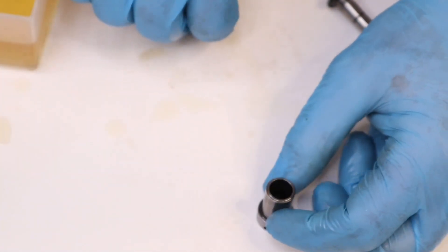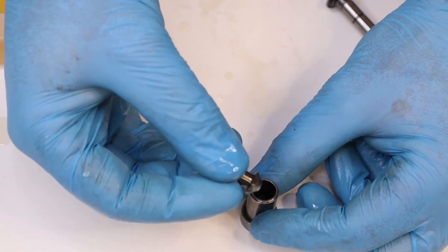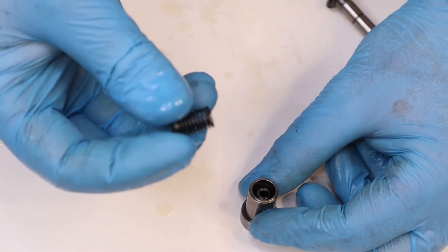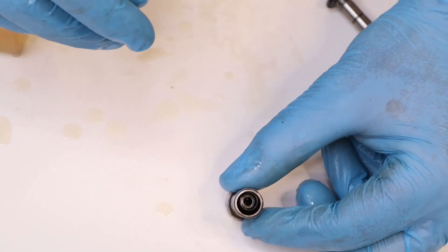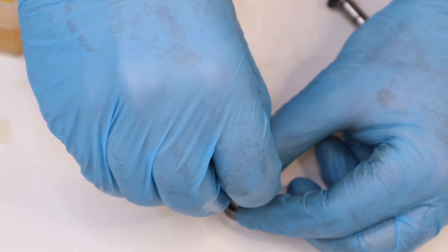So now we're just going to assemble the non-return valve. That's the actual valve part going in, the spring and the end stop.